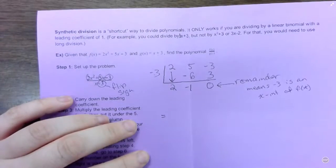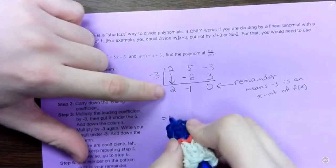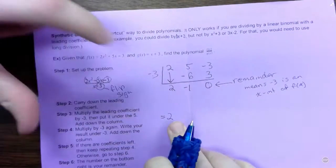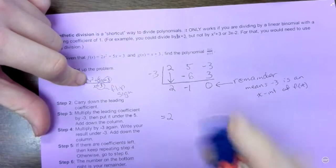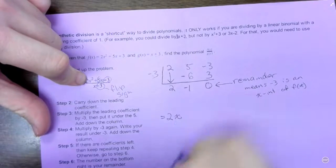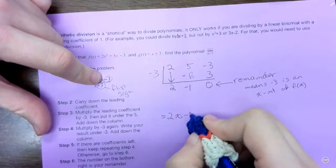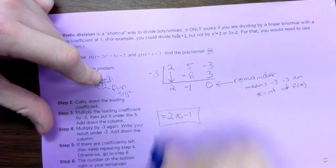Anyway, so I am done with my division. So my answer is 2. Now, you're always going to go one less exponent than you started with. So this is 2x. There's no more x squared. It's gone. Minus 1. And there is your quotient.